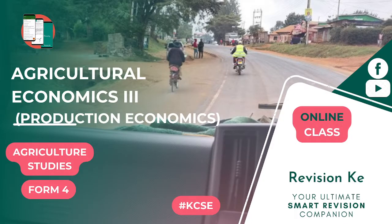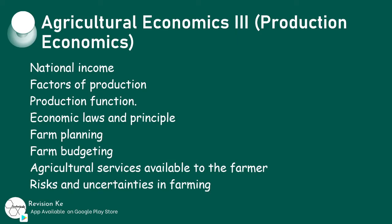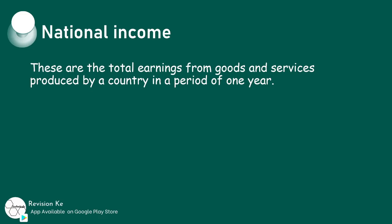Agricultural Economics 3, that is production economics, is our topic of discussion today. These are the subtopics, and you notice that we need to look at national income. National income refers to the total earnings from goods and services produced by a country in a period of a year.